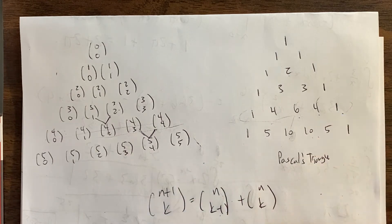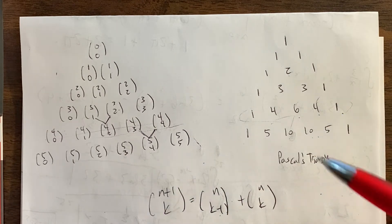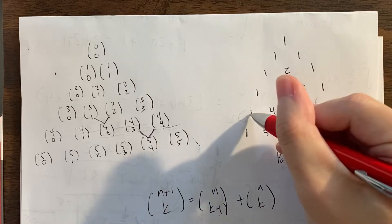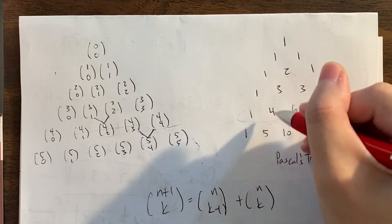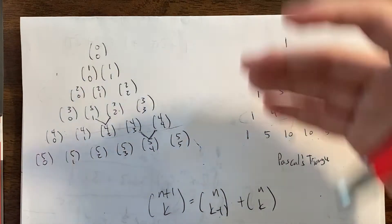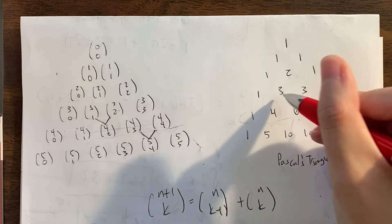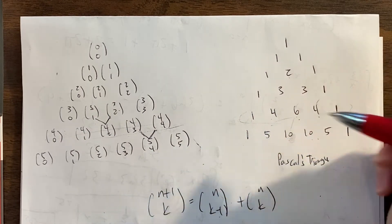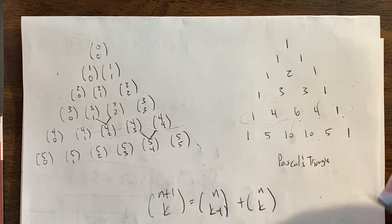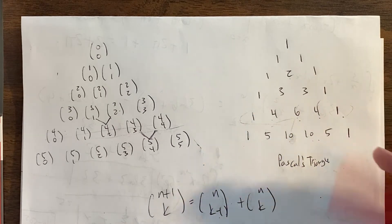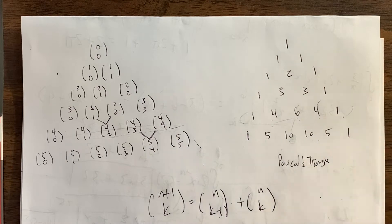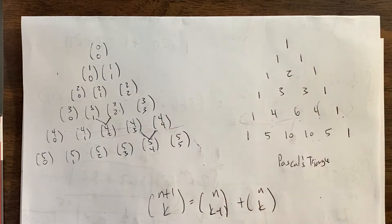Basically, if you want to find the next row of binomial coefficients, you start off with a 1, and then you add two terms to form the next term in the row. So 1 plus 3 is 4, 3 plus 3 is 6, 3 plus 1 is 4, and we end with a 1. This is a nice visual way to represent the binomial coefficients and quickly find them, and it's a nice way to organize all of them at once.